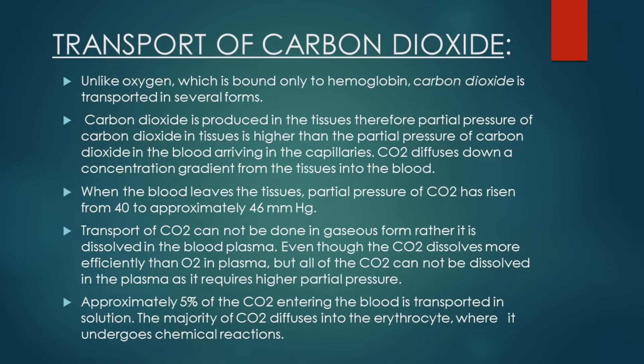We have discussed in great detail that oxygen is transported by binding to hemoglobin, but carbon dioxide is transported in several forms. Carbon dioxide is produced in the tissues of the body as a result of metabolic processes, and these tissues continuously utilize oxygen and produce carbon dioxide. So the partial pressure of carbon dioxide in tissues is higher than the partial pressure of carbon dioxide in the blood arriving in the capillaries that surround the tissues. So carbon dioxide diffuses down a concentration gradient from tissues into the blood — from higher partial pressure to lower partial pressure.